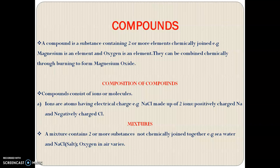An ion is a charged particle. For example, if you expose some air molecules to radioactive waves — let's say alpha radiations — those alpha radiations will knock electrons out of the air molecules. When those air molecules lose electrons, there will be an imbalance in the number of protons and electrons. Since they have lost electrons, there will be more positive charge on those atoms or molecules.